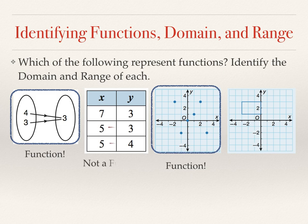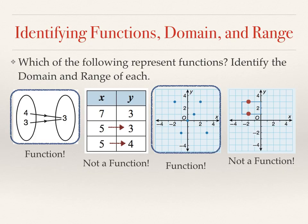Once again, the table is not a function. And the graph on the far right, the continuous curve, is also not a function. I've shown an example of an x-coordinate negative 2, which has more than one y-coordinate.